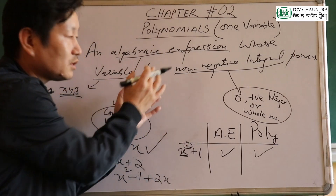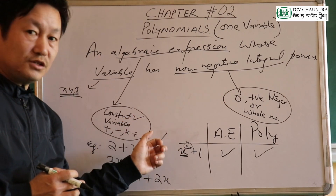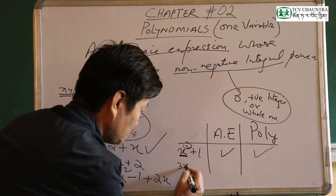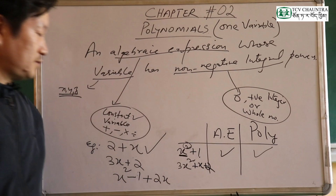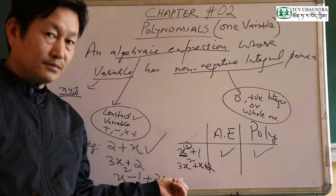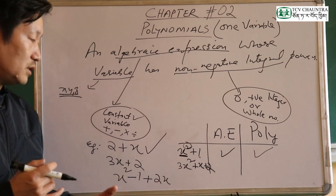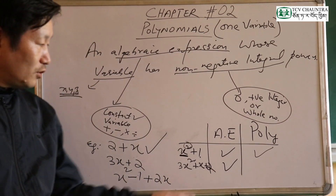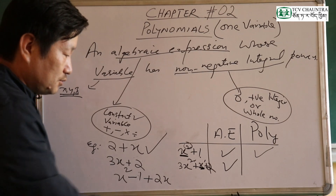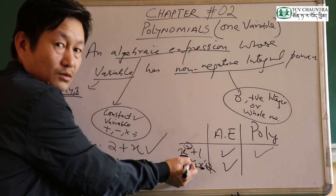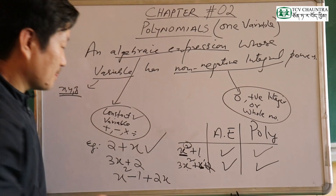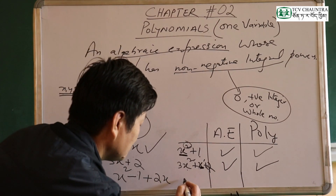If the power is 0.5, it is not a whole number, so the expression is not a polynomial. For example, 3x² — here x has power 2, which is a non-negative integer. From the variables, x has power 1 and x² has power 2. These are non-negative integers, so these qualify as polynomials.